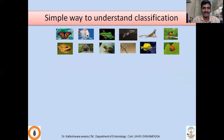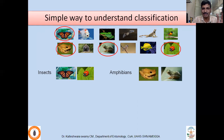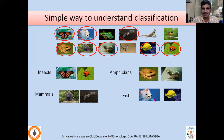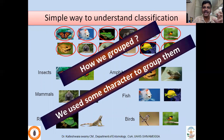To understand further — imagine you are given 10 to 15 specimens of different animals and asked to classify them. Being a biology student, you will classify them as insects, amphibians, mammals, fishes, reptiles, or birds. When you are classifying, what did you do? You grouped them. You used some characters to group them, maybe with an inherent basic idea. So that is the way — we used some characters to group them.